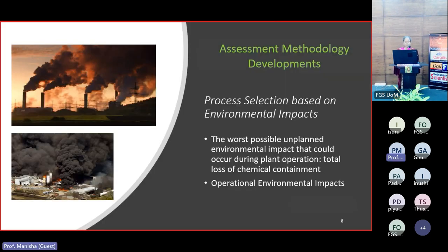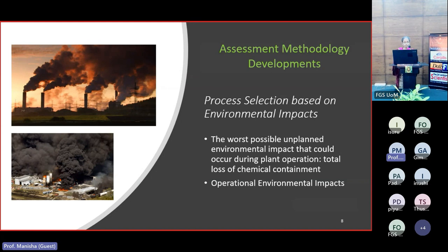Initially we considered environmental impacts and developed methodologies to select routes based on environmental impacts. If we consider the environmental impacts from chemical process plants, there are various ways in which they can occur. One scenario is to consider the worst possible unplanned environmental impact — that is, the total loss of chemical containment, or release of the entire chemical inventory in the plant as a one-off release. We can also consider various releases during day-to-day operation of the plant, including accidental releases and small leaks from equipment, which we refer to as fugitive emissions.